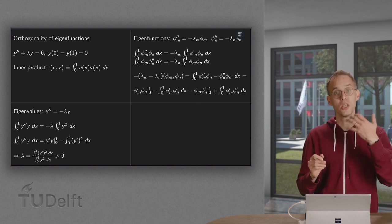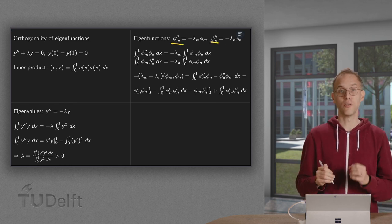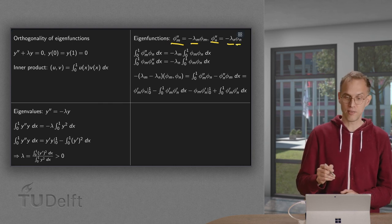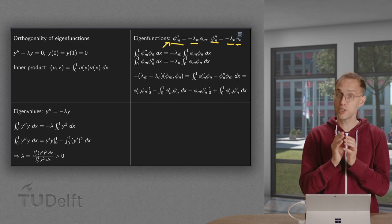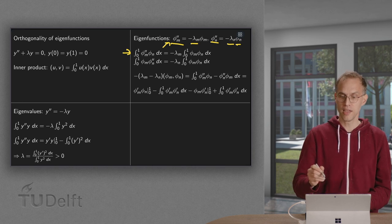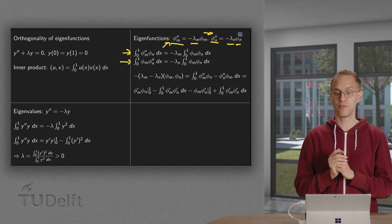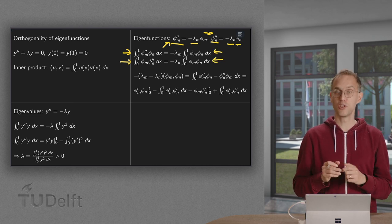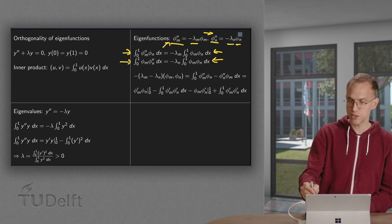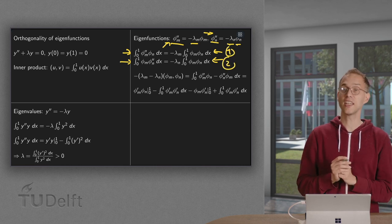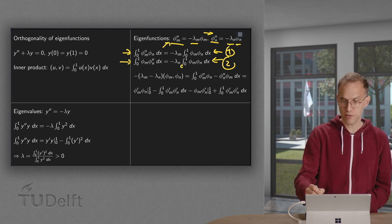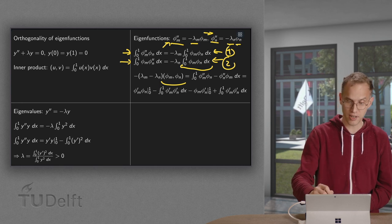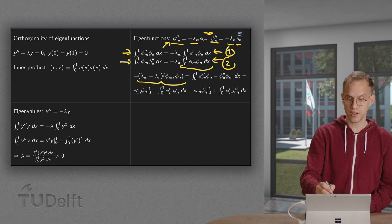We can use a similar trick to show that the eigenfunctions are mutually orthogonal. Take two eigenfunctions phi m and phi n. We know phi m double prime equals minus lambda m times phi m, and phi n double prime equals minus lambda n times phi n. We multiply the first equation by phi n and integrate from zero to one, and the second equation by phi m and integrate from zero to one. Taking the difference of the two equations, the right hand side has lambda m minus lambda n times the inner product of phi m and phi n.